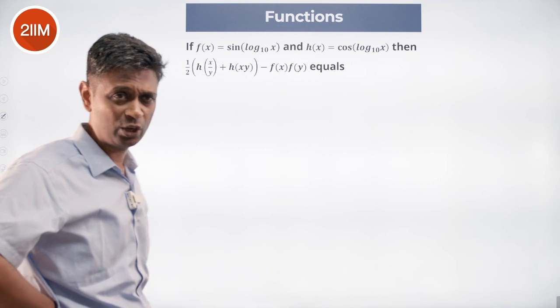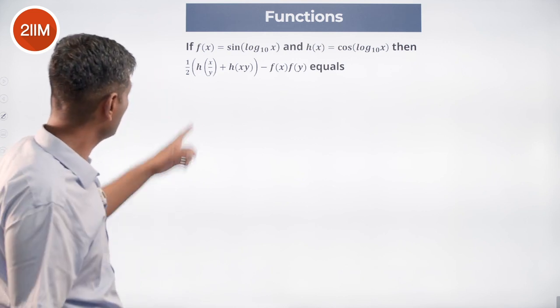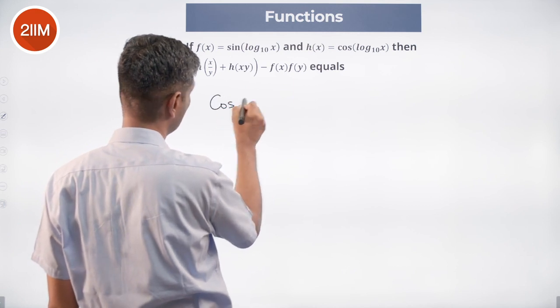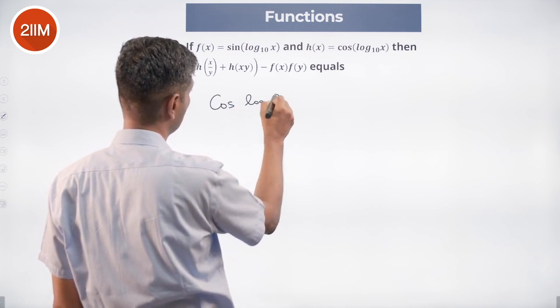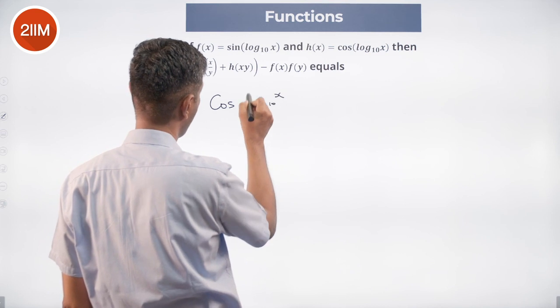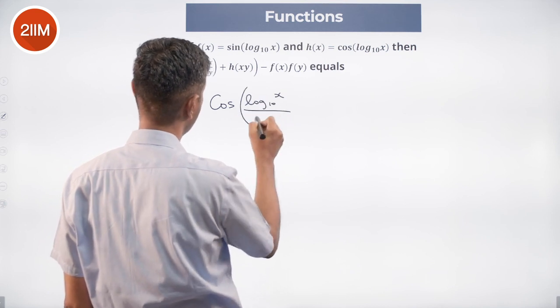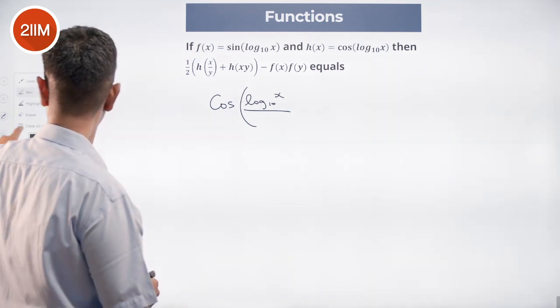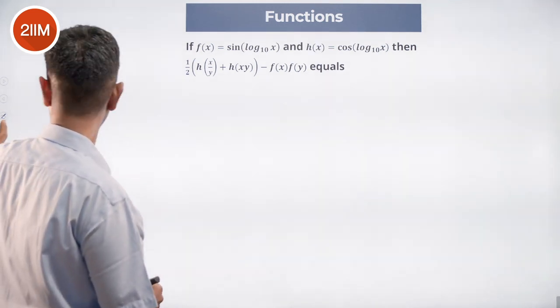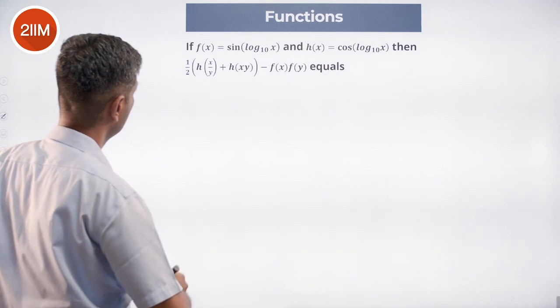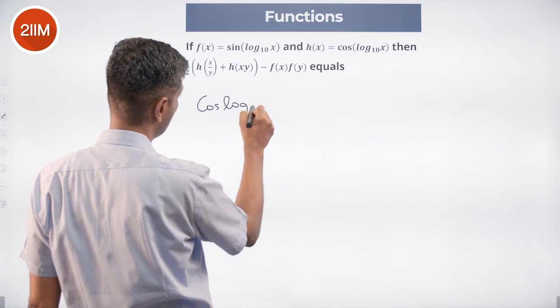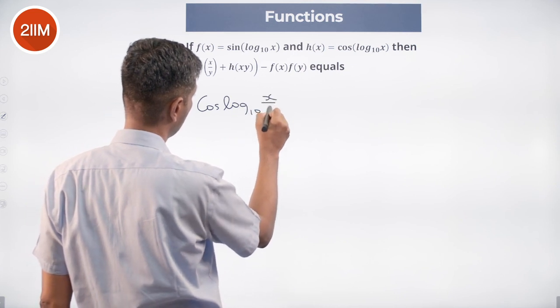h(x/y) is cos(log₁₀(x/y)). You simplify this, start all over again. h(x/y): cos of base 10 of x/y.